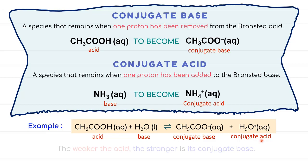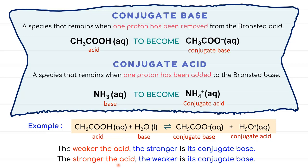It can be concluded that weak species, either acid or base, will form strong conjugate species. While the strong species, either acid or base, will form weak conjugate base.